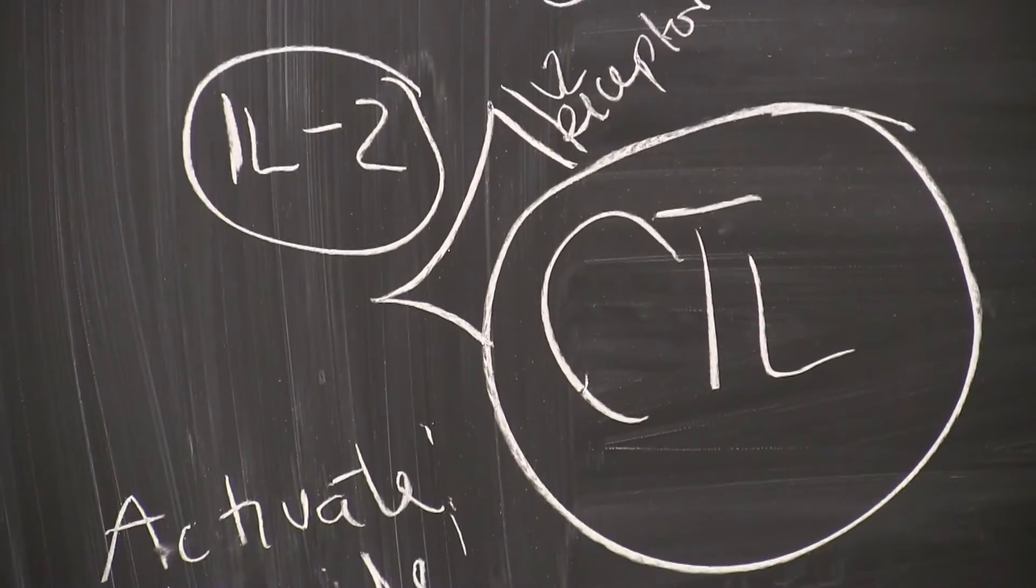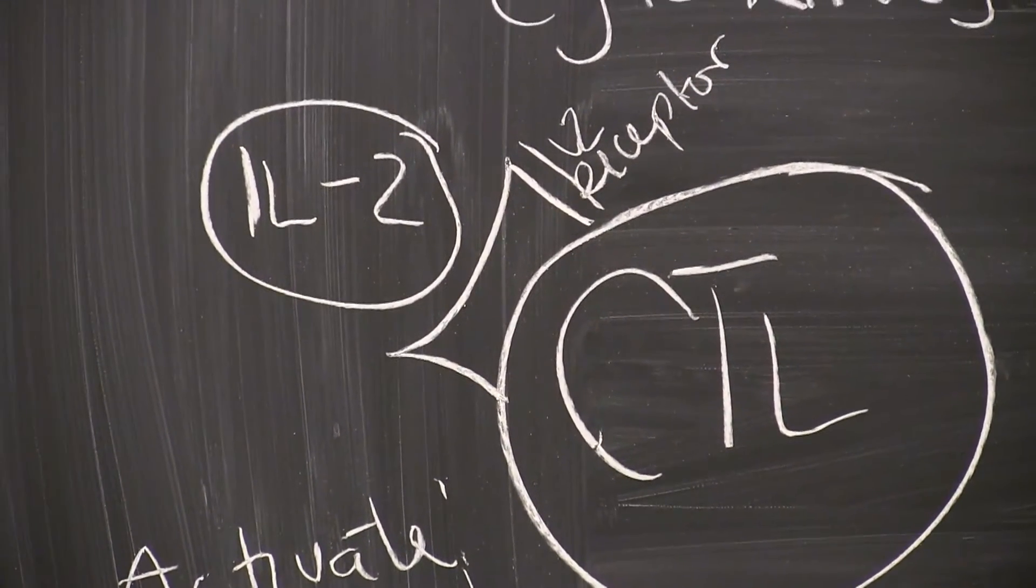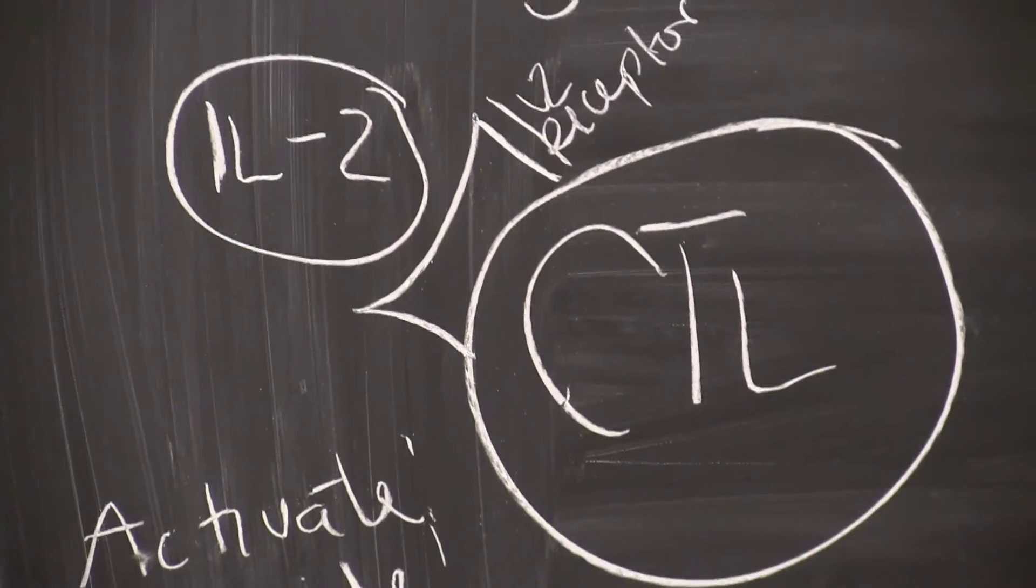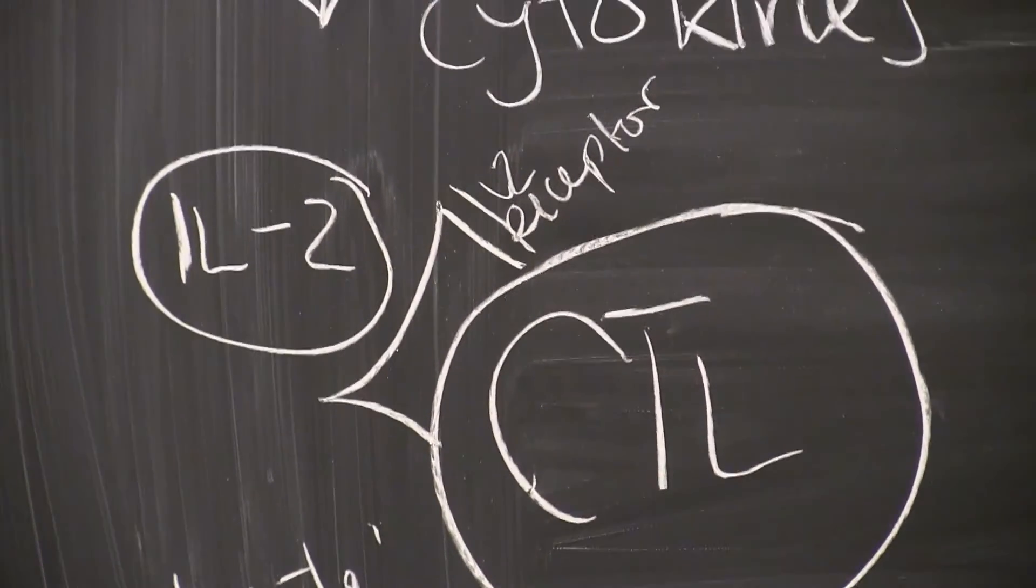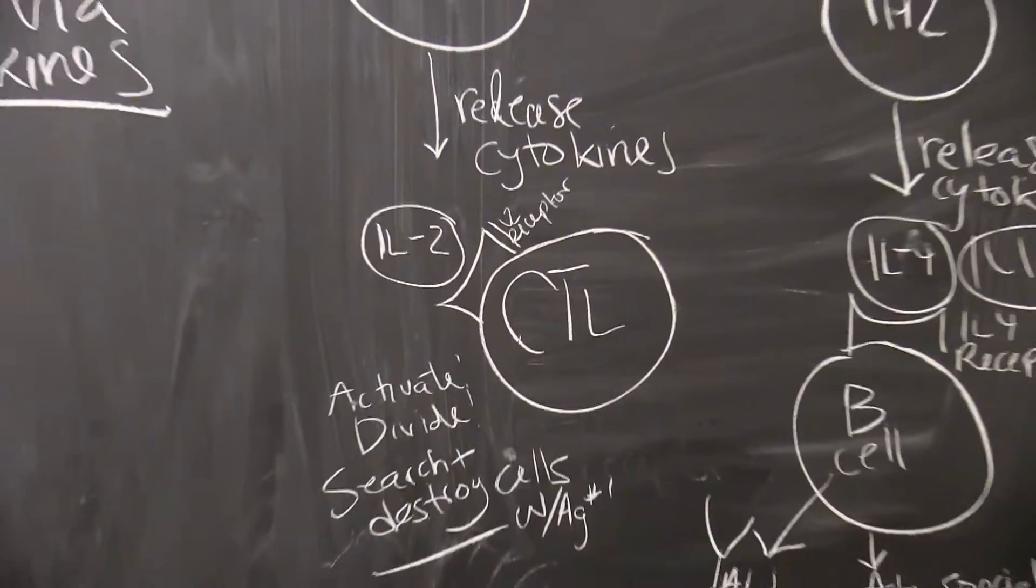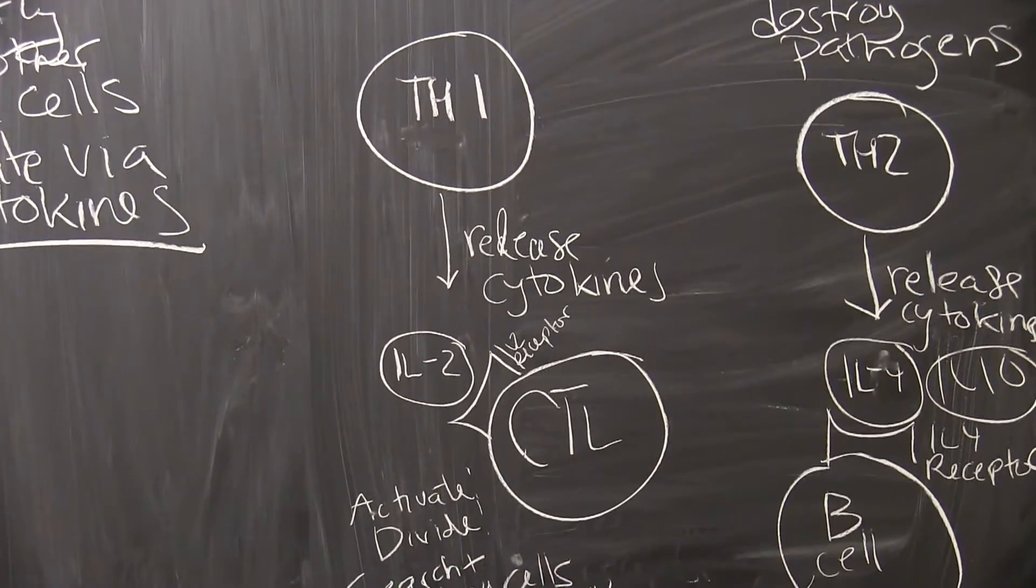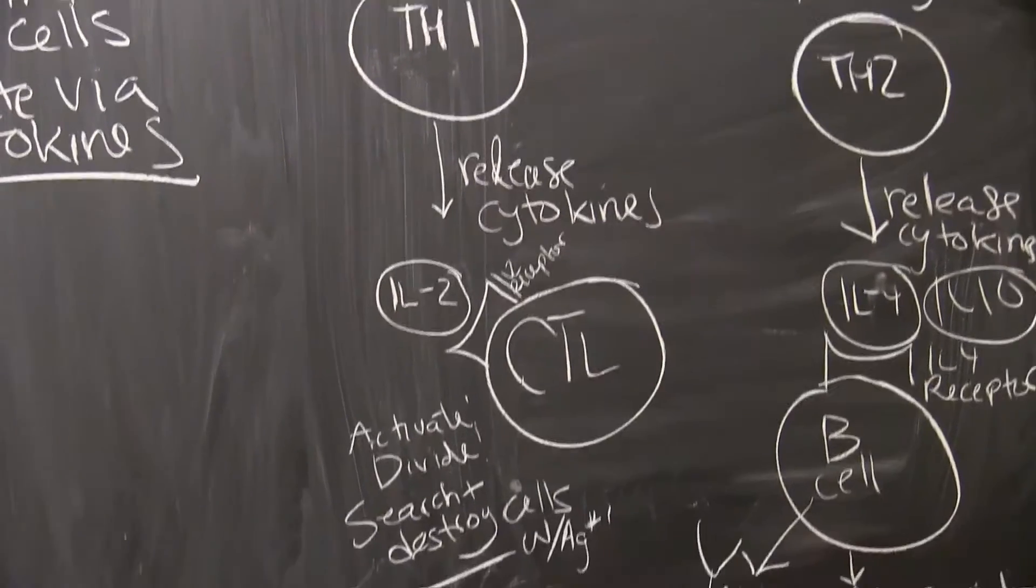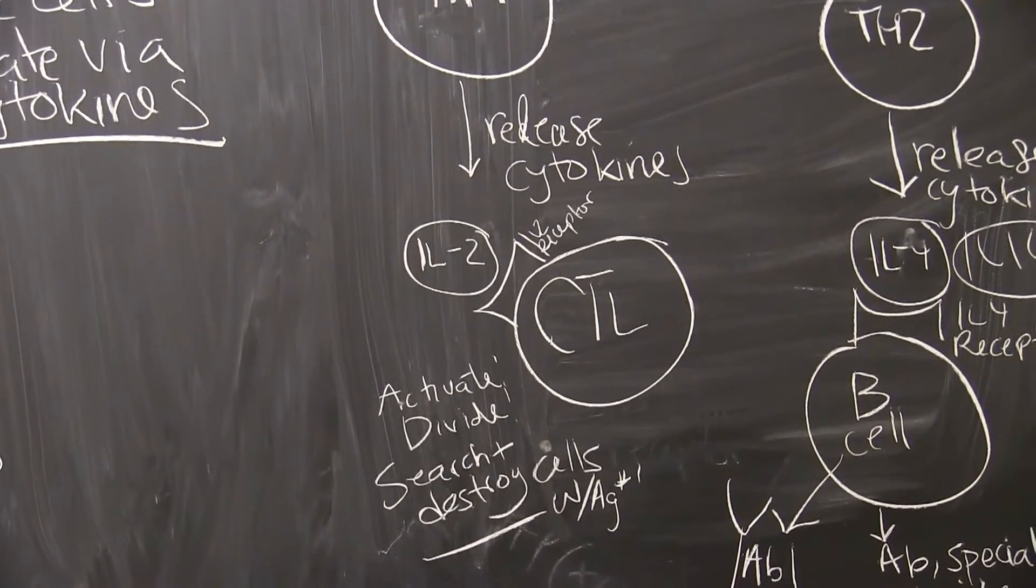On the surface of the killer T-cell is this cytokine receptor that's specific for IL-2. So when the cytokine binds to the killer T-cell, the cytotoxic lymphocyte, that is what activates the killer T-cell. Notice that the helper T-cell does not directly bind to the CTL. It's this indirect action of releasing cytokines, and it's the cytokines themselves that activate the CTL.